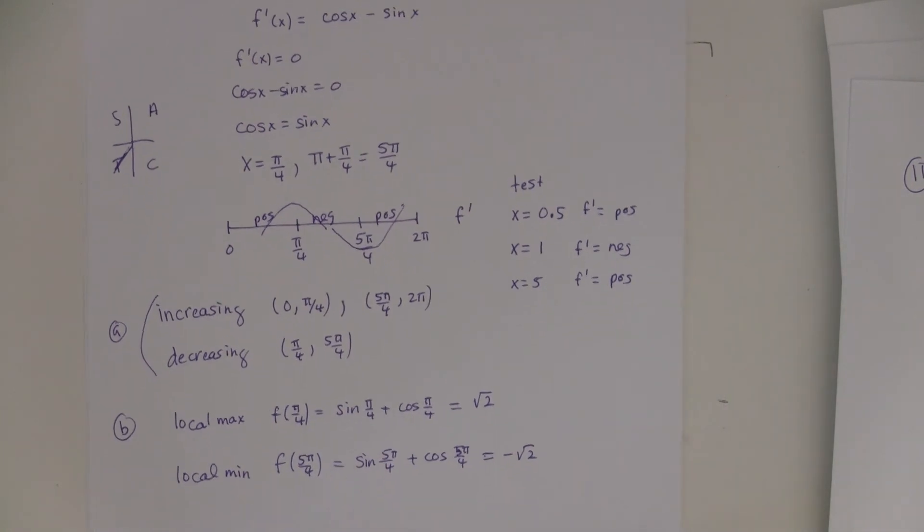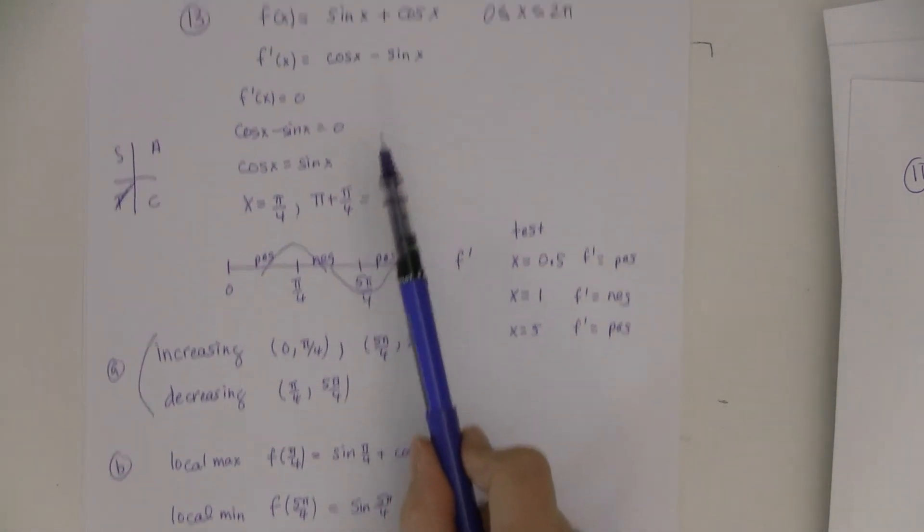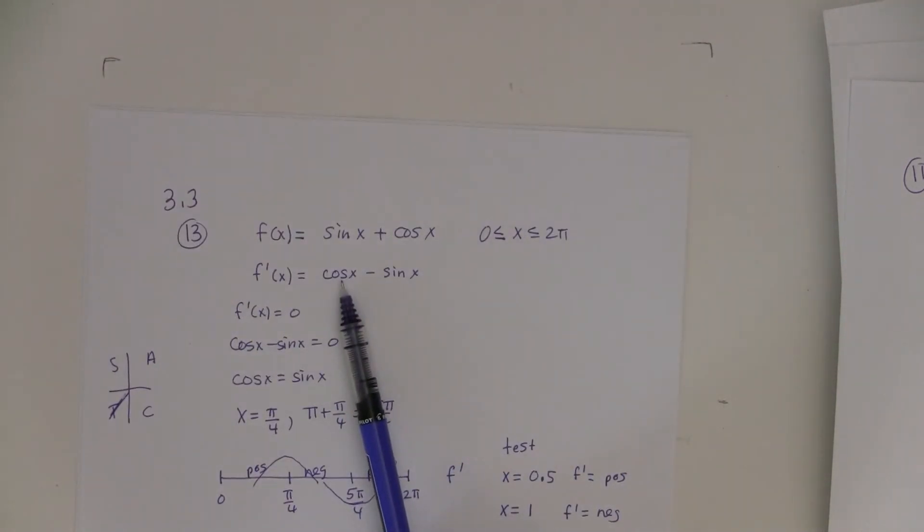If you wanted to find where it has concavity, concave up and concave down, you're going to take the derivative again, right? You're going to take the derivative again. I wasn't asked that when they asked me.